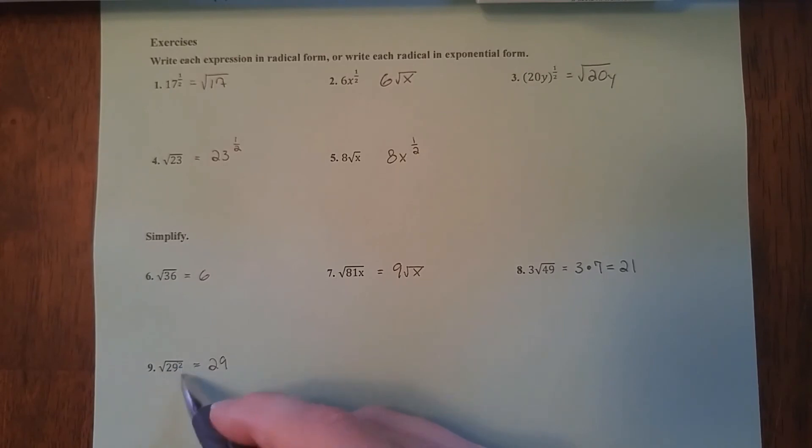Now, the reason why that is, is because see what's under the radical, 29 squared? Essentially, what we have is 29 squared, and since it's all under a radical, that means it's all to the 1 half power. Now, remember what happens when we have an exponent on an exponent? We multiply them. So we get 29, and then 2 times 1 half is going to be 2 over 2, and 2 over 2 equals 1, and 29 to the first power is just 29.